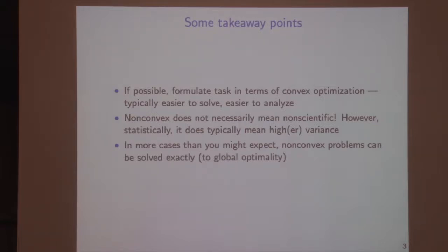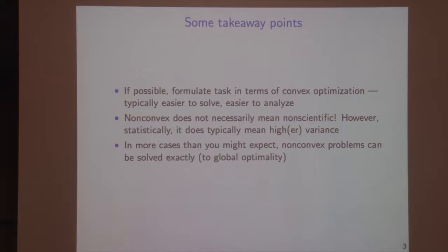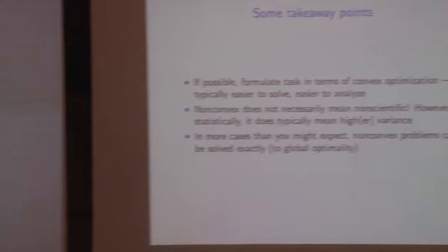Higher variance relates to mean squared error through the bias-variance trade-off. If two estimators have the same bias but one has higher variance, the one with higher variance has higher mean squared error. This is one reason to be cautious about non-convex problems, even aside from algorithmic complications — statistically, if you're not achieving a big gain in bias, the mean squared error will likely be inflated.